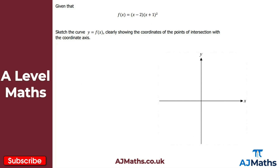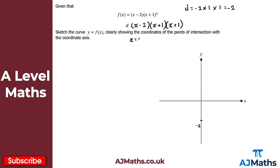Taking a look at another example. This one might look a little different — we need to consider the second term. We have x minus 2, and then x plus 1 squared, which is just x plus 1 times x plus 1. So d here equals minus 2 times 1 times 1, which is minus 2. It cuts through the y-axis at minus 2. Now, with x plus 1 appearing twice, we get a repeated root at x equals minus 1, meaning the curve just touches minus 1 and comes back down — it doesn't cut through.